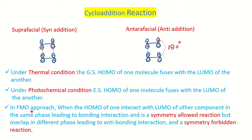We use the Frontier Molecular Orbital (FMO) approach, considering the HOMO of one molecule and the LUMO of the other. If this interaction gives bonding interaction, the reaction is symmetrically allowed. If it gives anti-bonding interaction — i.e., different phases — it is symmetrically forbidden. Therefore suprafacial addition is symmetrically allowed while antarafacial addition is symmetrically forbidden.